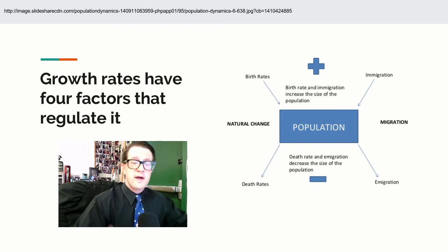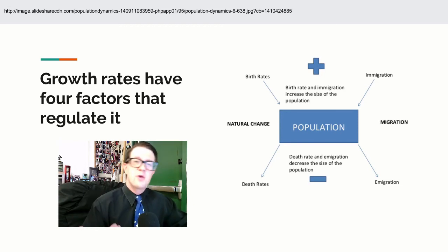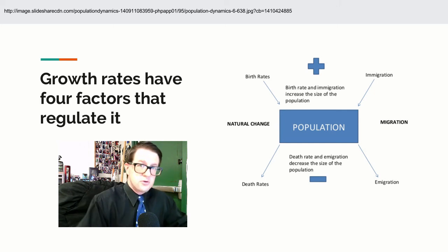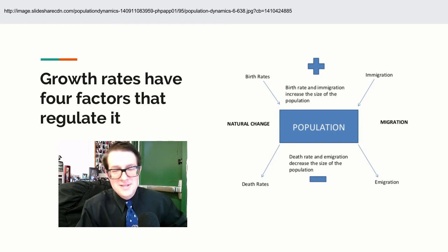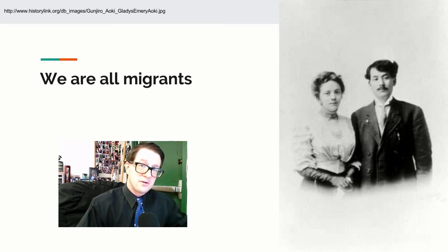If you don't have food, shelter, and space, those numbers go down. What you also have are death rates, which will obviously decrease the population, and then you have emigration — leaving the area. Not having food, shelter, and space will increase emigration and increase death rates. So food, shelter, and space always turn out to influence the growth rate. A story I'll tell you in class: we are all immigrants.